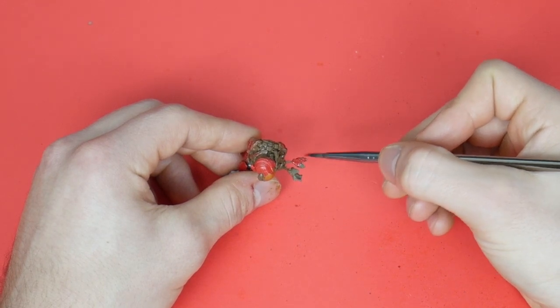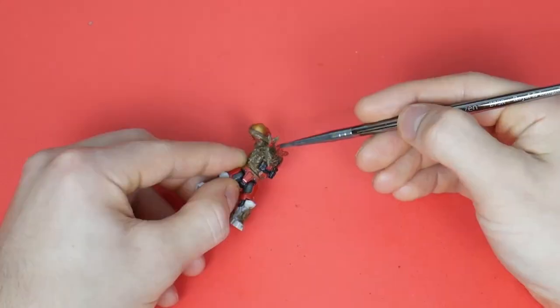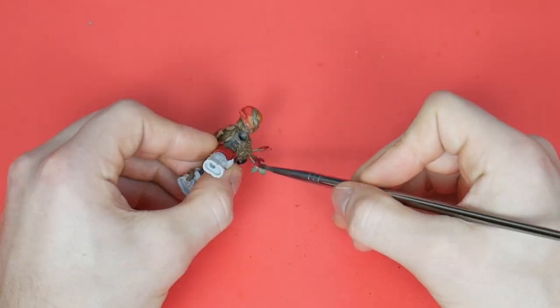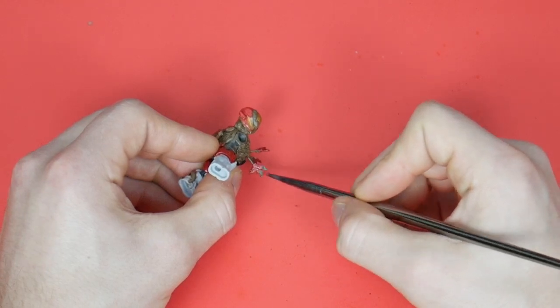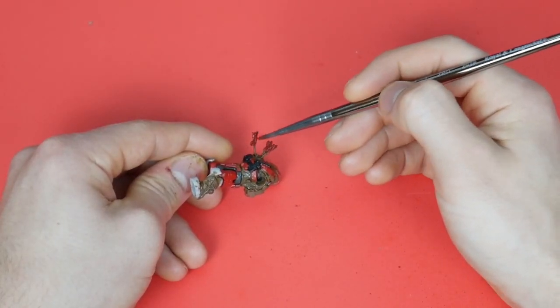For the tendrils we're gonna be using a nice citadel red. This is pretty self-explanatory. Just apply it onto all the tendrils on both sides. When you're making a ton of figures this can definitely take a long time as a process but it's really worth it in the end to see all your flood figures and kind of grow your army.